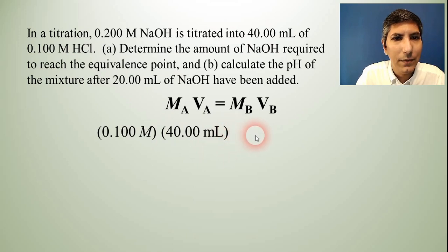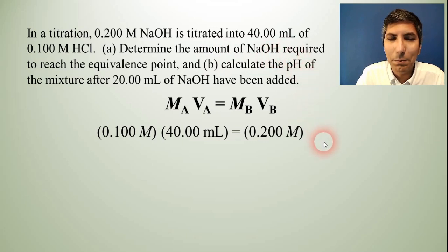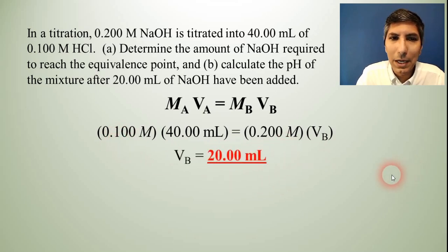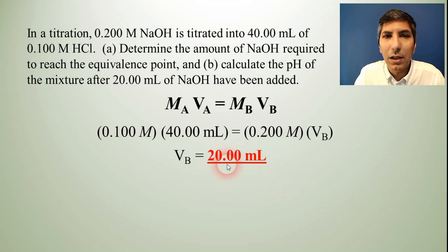Our M sub B is 0.2 moles per liter. So that goes in there for the molarity of the base. We're trying to determine the amount of sodium hydroxide required. So V sub B is going to be our unknown. So we're going to leave that as VB. Now we just have to solve using algebra. And when you multiply 40 times 0.1 and then divide that by 0.2, you'll find that your V sub B is 20 milliliters. And so it's going to take 20 milliliters to get to the equivalence point.